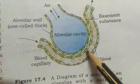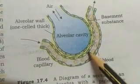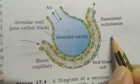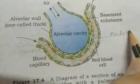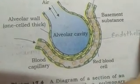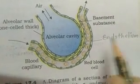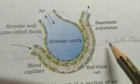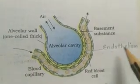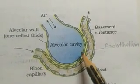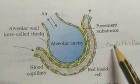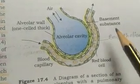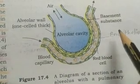The endothelium — the epithelial lining of the blood vessel is called endothelium. So, the wall of the blood vessel is called endothelium. Squamous epithelium of alveoli and endothelium of blood vessels — and the basement substances in between them.